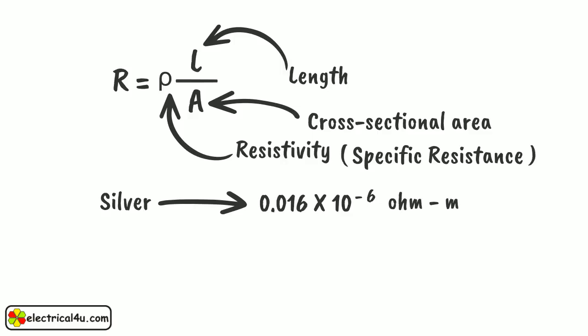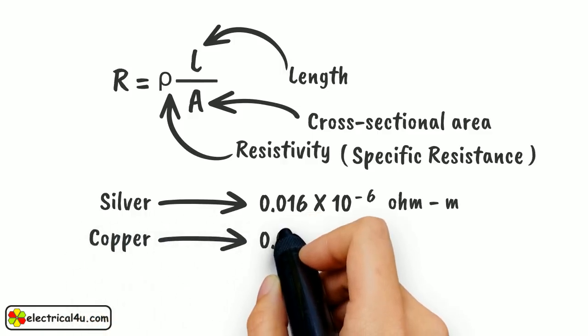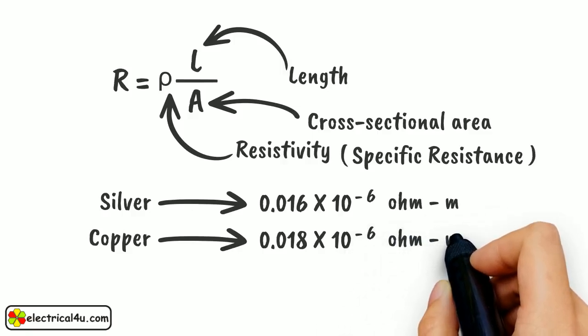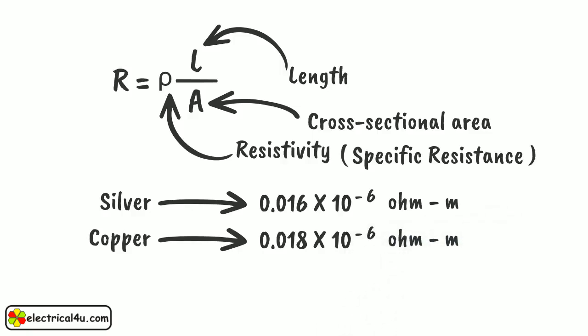After silver, copper is the most conducting. The resistivity or specific resistance of copper is somewhat more than that of silver, that is, 0.018 into 10 to the power minus 6 ohm meter.